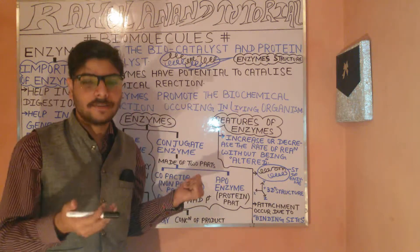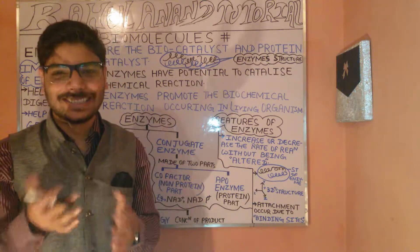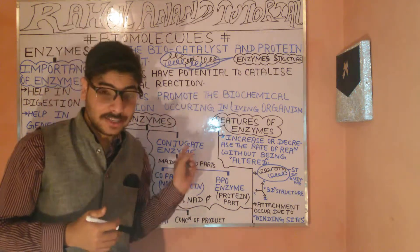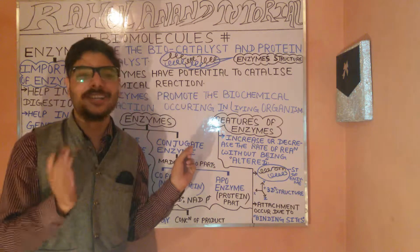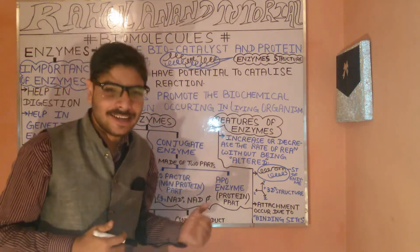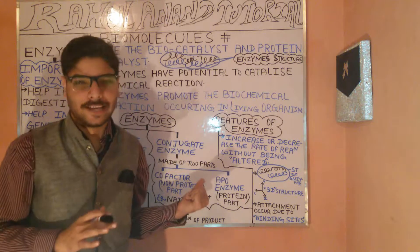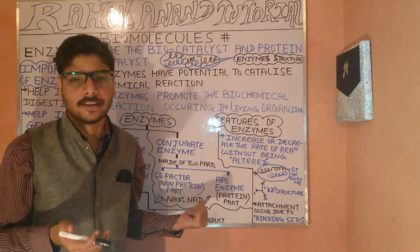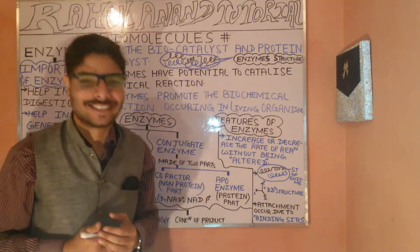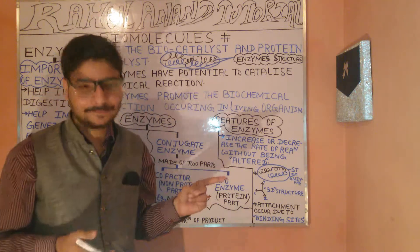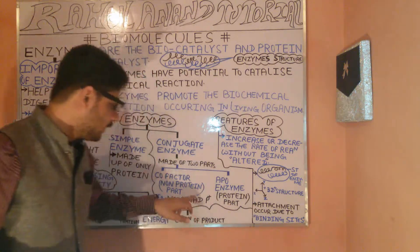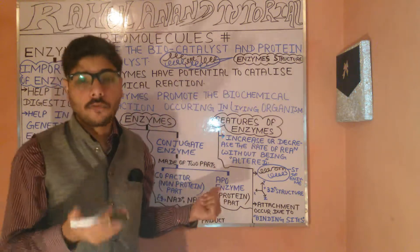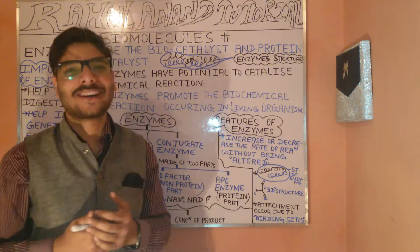Conjugate enzymes are further divided into two categories: co-factors and co-enzymes. These are the non-proteinous parts of the enzyme. Proteins in this context are composed of two broad categories.